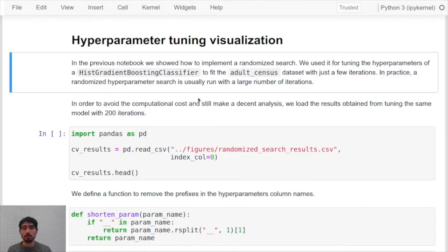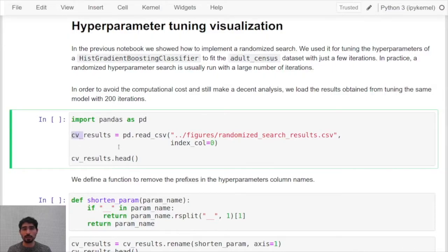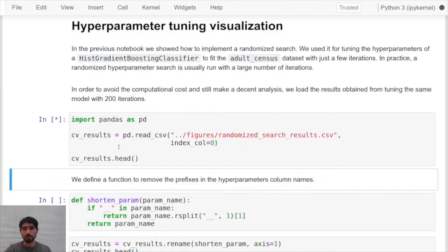In this case we will load a pre-computed dataset containing the results of running the model and validating it with 200 iterations.